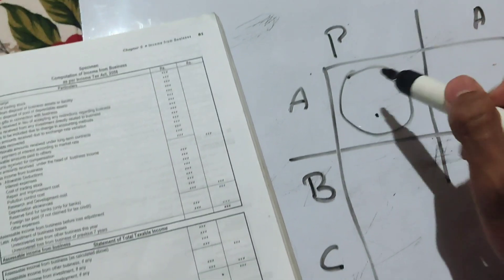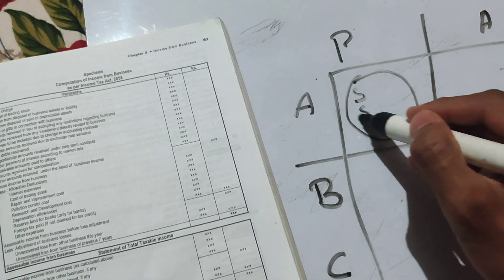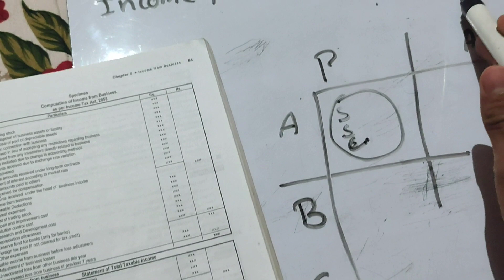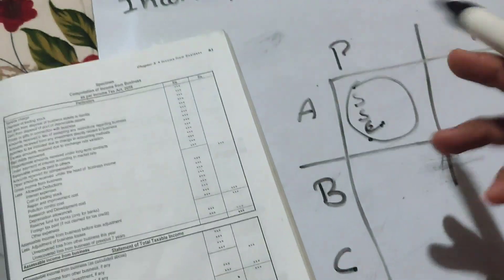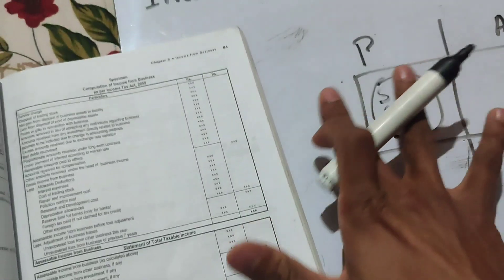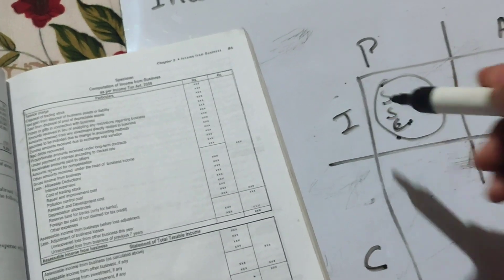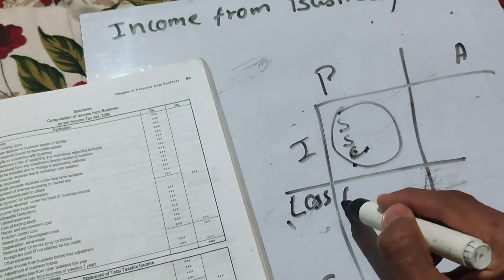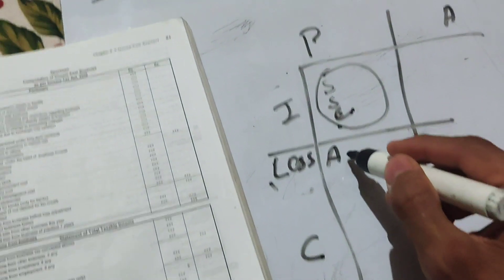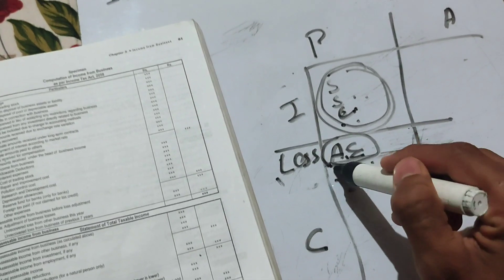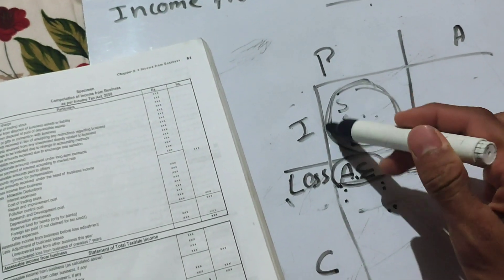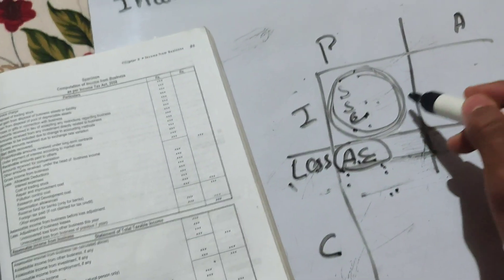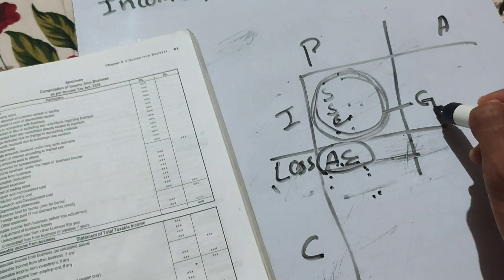Business income can include sales, service charges, consultancy fees, and other business or profession income. After listing all income, we calculate total income. Then in the second part, we deduct allowable reductions — that is, admissible expenses. Admissible expenses are those expenses which are necessary to generate that income.